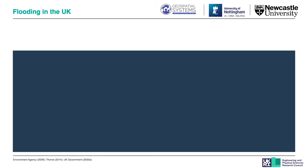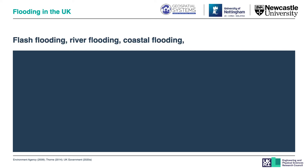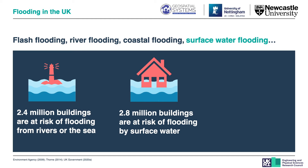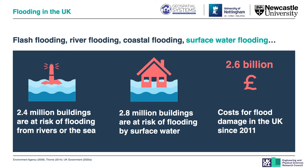Floods are regarded worldwide as one of the most catastrophic natural hazards causing millions of lives and causing both financial and environmental damage. In general there are many different types of floods such as flash flooding, river flooding and coastal flooding. Here we are going to focus on surface water flooding. In England every year 2.4 million buildings are at risk of flooding from rivers or the sea, and another 2.8 million buildings are at risk from flooding from surface water. In addition, floods and the management of their damage currently cost the UK around 2.6 billion pounds.